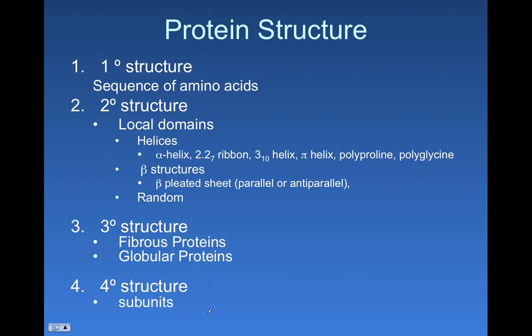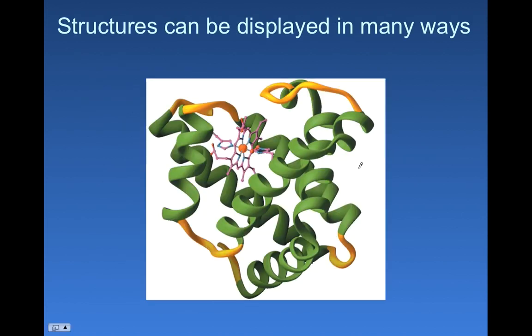The last category of structure, quaternary structure, is when you have multiple polypeptides joining together to form a unit. And that's called quaternary structure. We can think of a protein that has quaternary structure. Really, it has subunits attached to it. Myoglobin does not have any quaternary structure. This is one polypeptide.